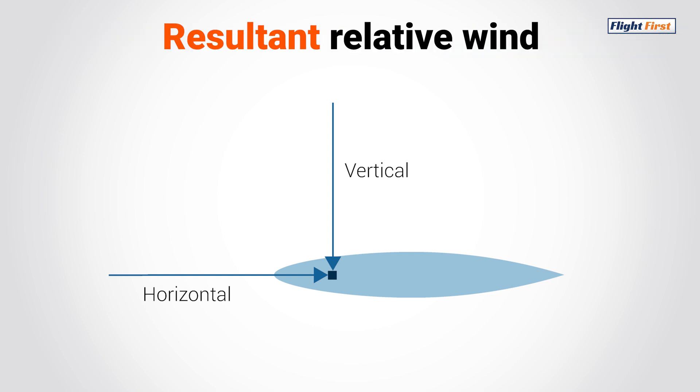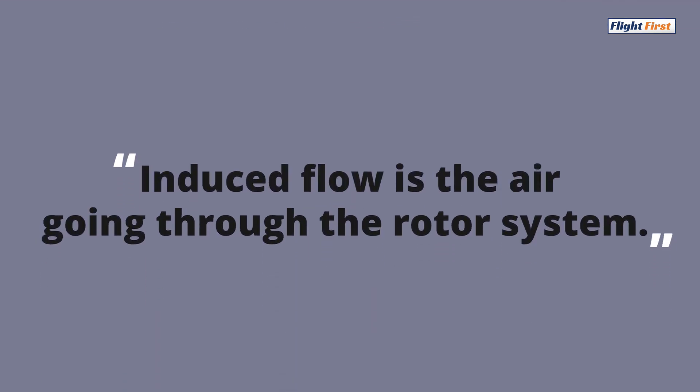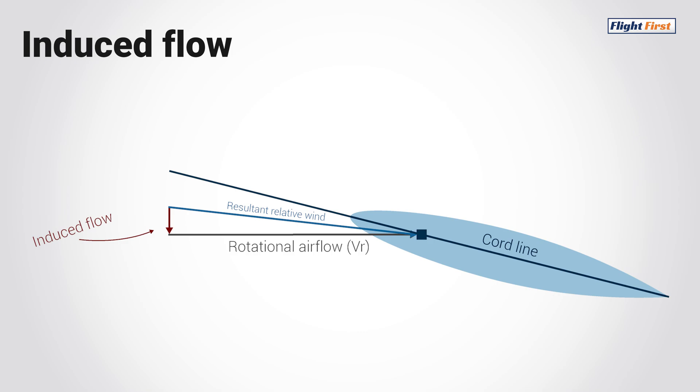The resultant relative wind is not exactly the same as the relative wind. The difference is that the resultant relative wind is affected by the induced flow. Essentially, induced flow is the air that's going through the rotor system from top to bottom. The induced flow changes the angle of the relative wind, which is referred to as the resultant relative wind.